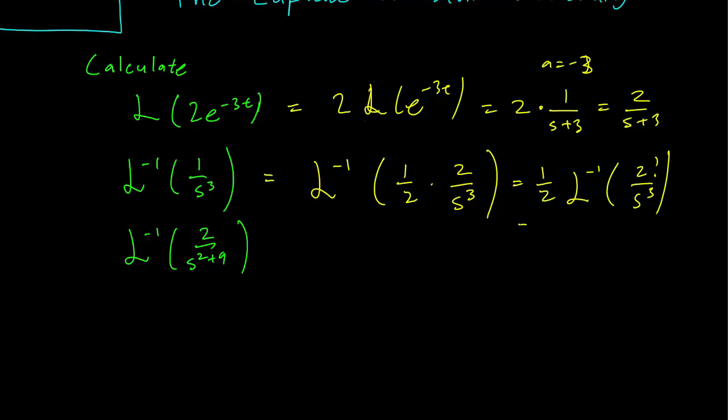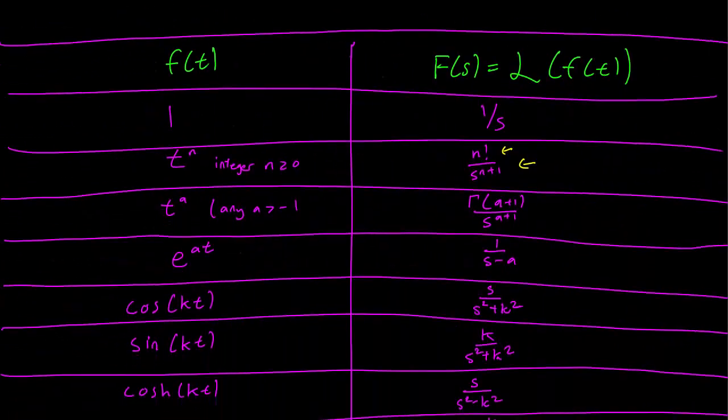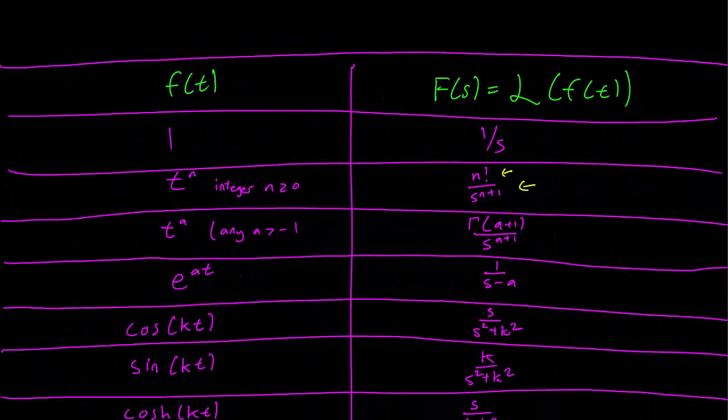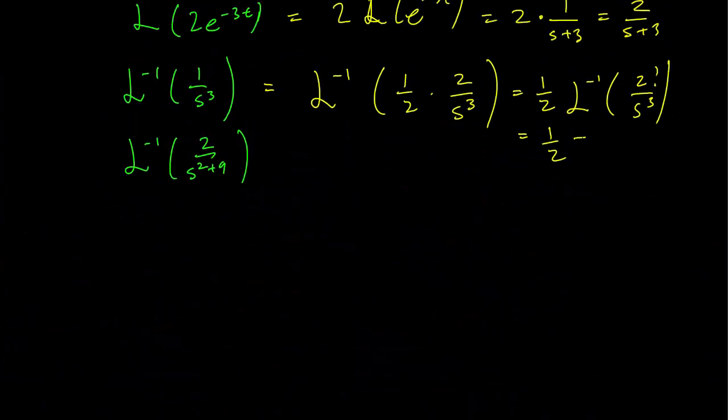This just gets us 1/2. We look at our table. On our right we have t^n for integer n and n equals 2. So this is just going to be 1/2 t². So the inverse Laplace Transform of 1 over s cubed is just going to be 1/2 t². And it's pretty straightforward that way.